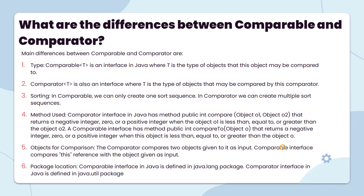For the comparison, the Comparator compares two objects given to it as input. Comparable interface compares this reference with the object given. Comparable interface in Java is defined in the java.lang package, and Comparator interface is defined in the java.util package.